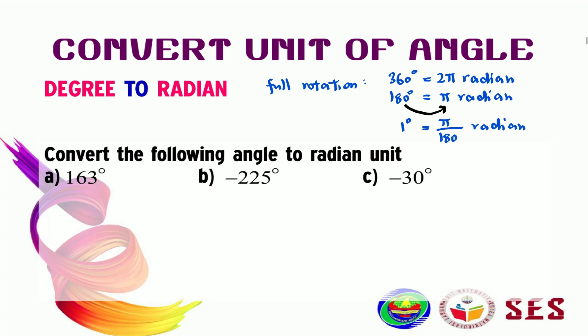163 degrees. Since we know that 1 degree is equal to π over 180 radian, to change 163 degrees, we just need to multiply this with π over 180. So, 163 degrees multiplied by π over 180 radian. Put this in your calculator, you're going to get 2.845 radian.